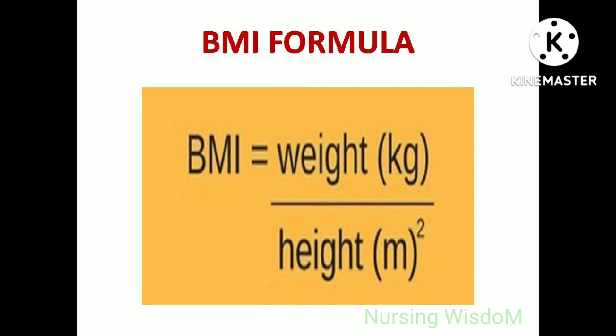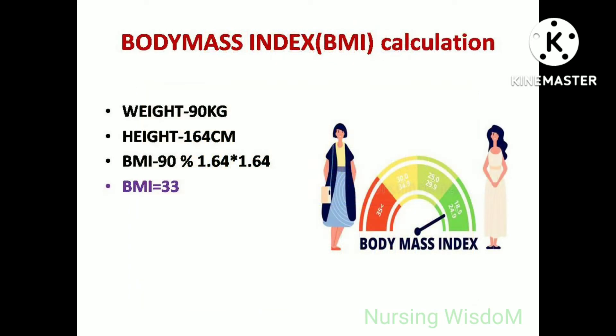BMI is calculated using this formula: BMI equals weight in kg divided by height in meter squared. For example, consider weight is 90 kg and height is 164 cm. Using the formula, weight in kg divided by height in meter squared: 90 divided by 1.64 into 1.64. By solving this, we get a BMI of 33.